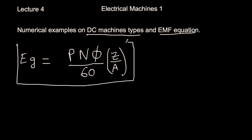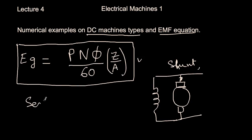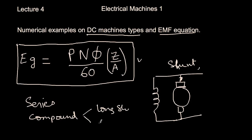Z is the total number of conductors, but not all conductors are connected in series — they are divided into parallel paths A. For example, with 400 conductors and 4 parallel paths, each path will have only 100 conductors, so the voltage is proportional to Z/A. This is the expression for EMF generated in the machine. We've seen different machine types: the shunt machine has armature resistance and a load. We've seen shunt, series, and compound — the compound has both series and shunt windings, with long shunt and short shunt variants.